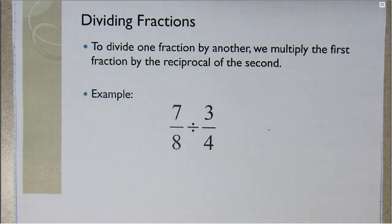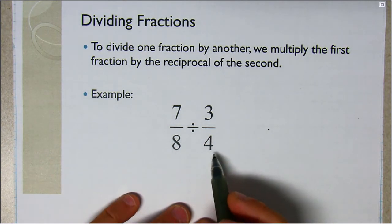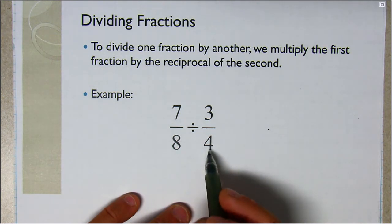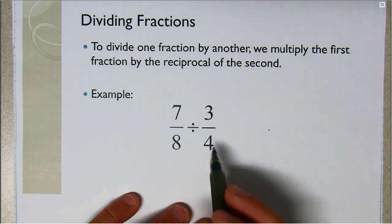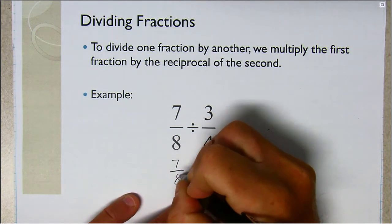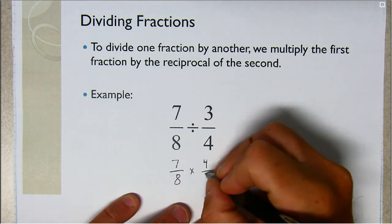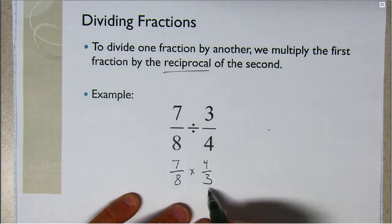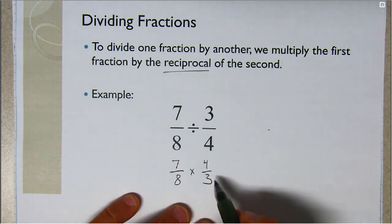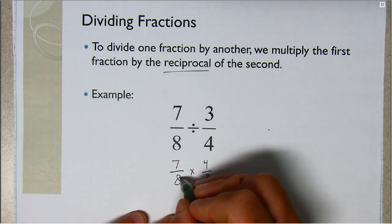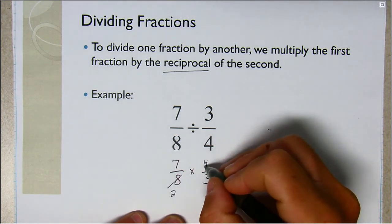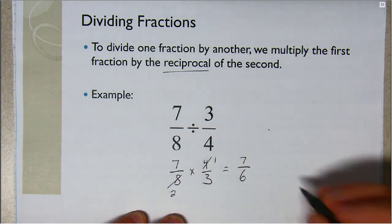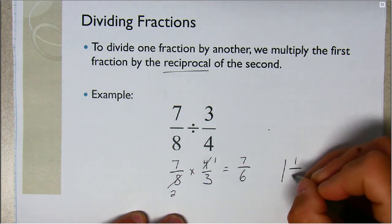Simple example: seven-eighths divided by three-fourths. These are pure fractions — no mixed numbers to convert. Change to multiplication by the reciprocal: seven-eighths times four-thirds. Cancel common factors: eight and four both divide by four — eight becomes two, four becomes one. Multiply: seven times one is seven in the numerator, two times three is six in the denominator. Seven-sixths is improper, so the answer is one and one-sixth.